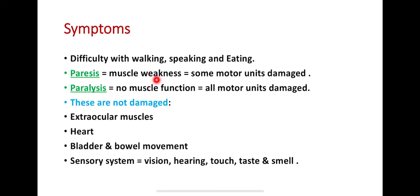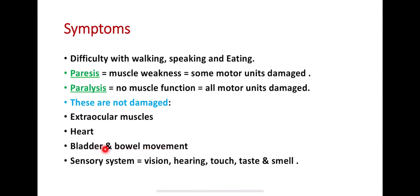If one of the motor units is locked in, the power units are affected. In ALS, there is sparing of the extraocular muscles and also sparing of bladder and bowel movements — these are typically preserved in motor neuron disease.